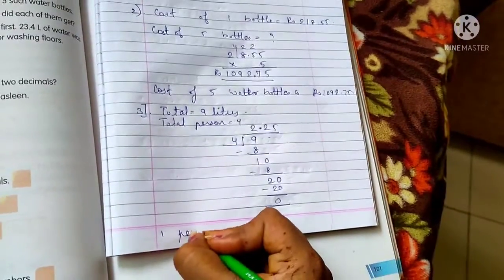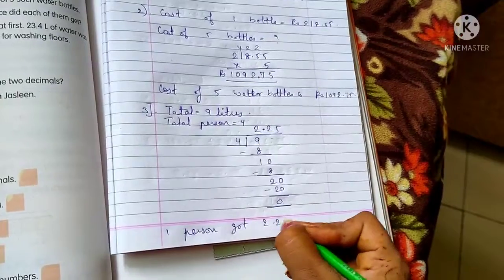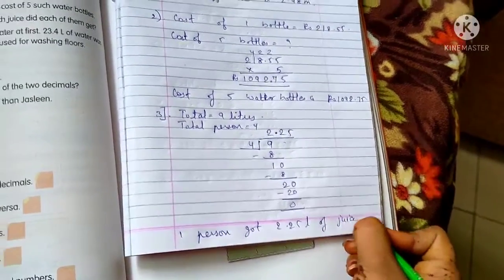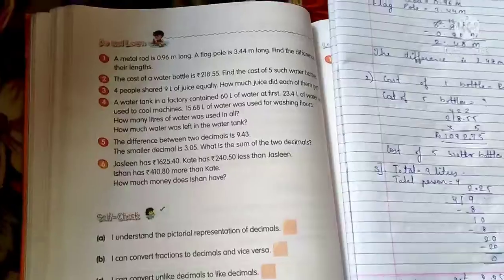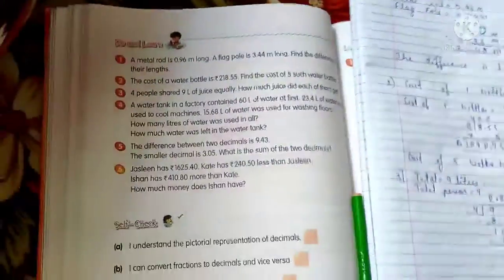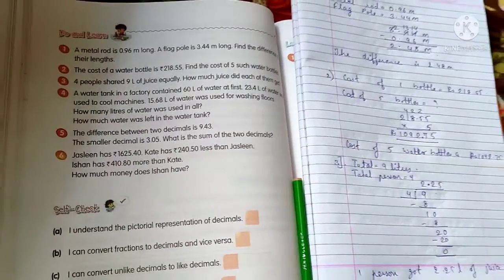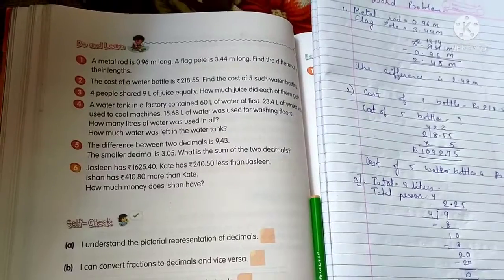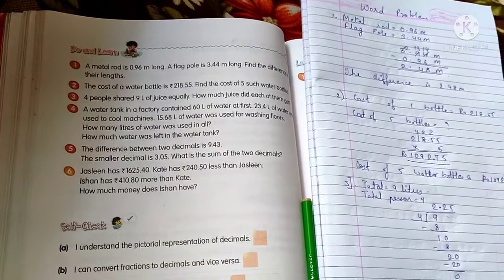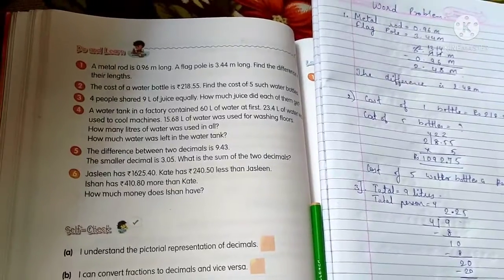Now see the 4th one, which is very easy. A water tank in a factory contained 60 liter of water at first. 23.4 liter of water was used to cool machines. 15.68 liter of water was used for washing clothes. So how many liters of water was used in all?